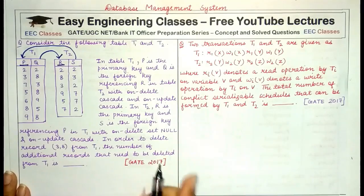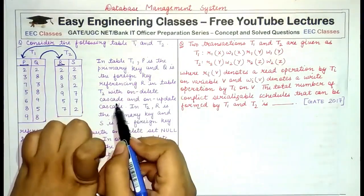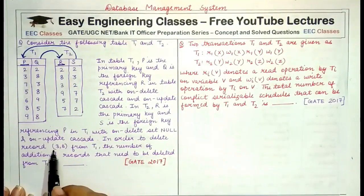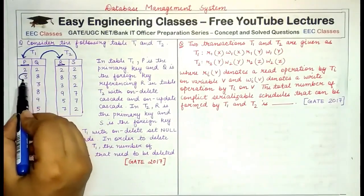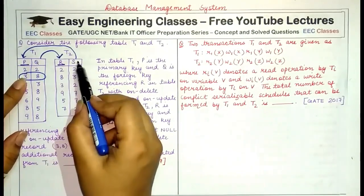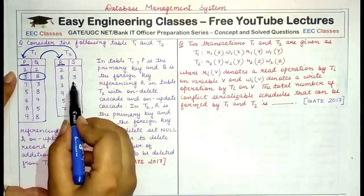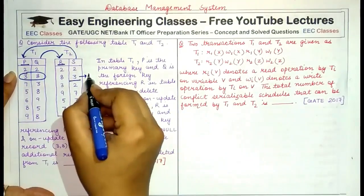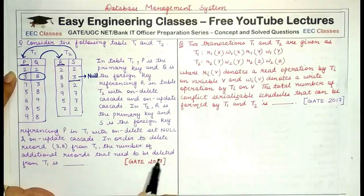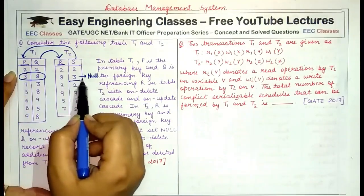Q has an ON DELETE CASCADE constraint and ON UPDATE CASCADE, while S has ON DELETE SET NULL. When we delete (3, 8) from T1 — specifically when value 3 is deleted from primary key P — S is affected. Because S has ON DELETE SET NULL, the value 3 present in S would be set to null, with no additional deletion occurring.